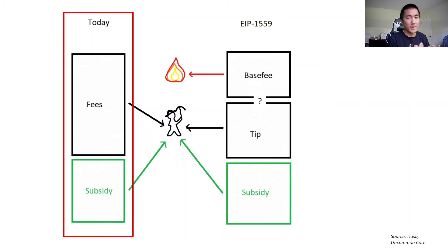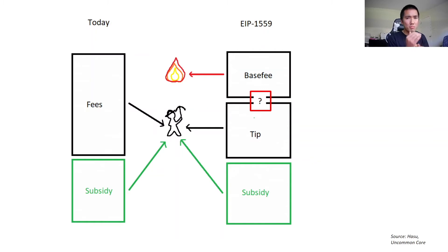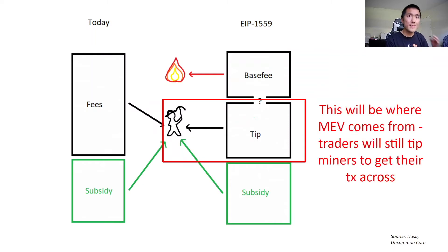Today, when a miner mines a block, they get a block subsidy of two Ethereum, plus all the fees generated within that block. With EIP-1559, they get the same subsidy of two ETH, but the fee is split into two sections. First is the base fee, which gets burnt — that's the deflationary effect people talk about. The miner also receives a tip from the transaction. MEV will still come from the tip, and people wanting to get their transactions through will still tip miners. So MEV will still exist post-EIP-1559, despite the burning of the base fee.